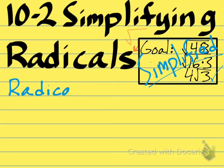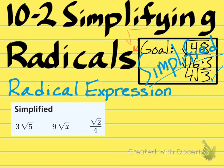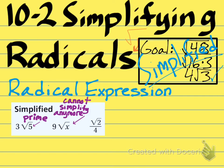Here are 3 radical expressions that are already simplified. In the first example, 3 times the square root of 5 — because 5 is prime, you know you're done. Any time your radical has a prime number underneath it, you are done simplifying. In the middle example, you cannot simplify x further because it's already raised to the first power. If x were raised to the second or third power, you'd be able to simplify it. In the third part, you have a fraction, but the denominator doesn't have a radical sign in it, so we're okay. If there were a radical sign in the denominator, we wouldn't be good.